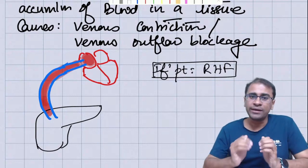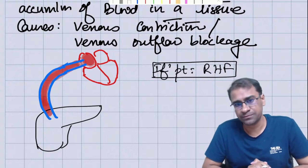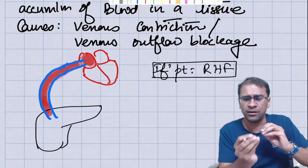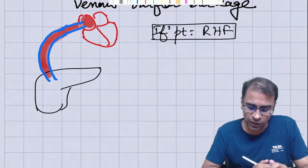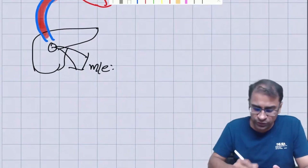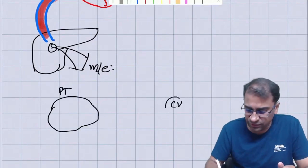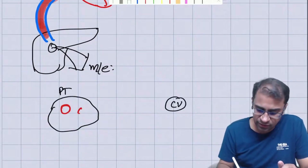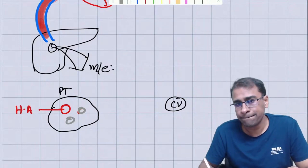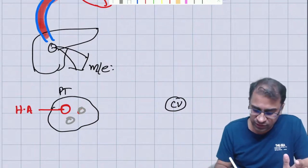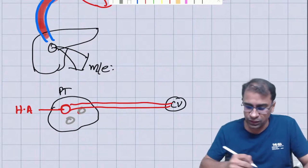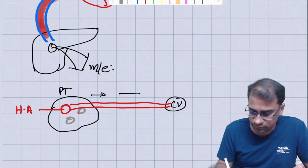To understand the morphological findings of the liver in this case, let's move to a more basic level. If we take a microscopic view, here is the portal triad and here is the central vein. In the portal triad there is a duct, hepatic artery, and vein. The blood flows from the portal triad toward the central vein — this is the flow direction.